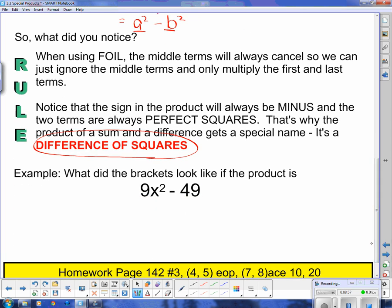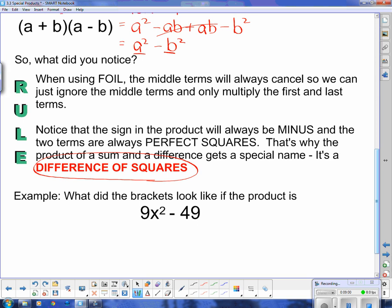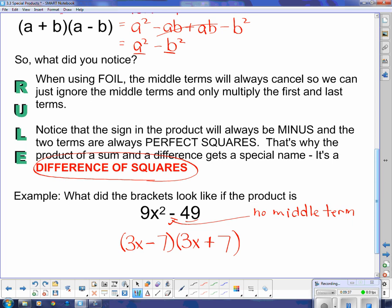And so working backwards, hopefully we'd be able to figure that one out. What if I wanted to know what two brackets made this thing up? Well, since the middle term is missing, they must have canceled each other out. And so we're looking for the middle terms to be exactly the same. These are perfect squares. So it must have been a 3x and a 3x that were multiplied to give me this 9x squared. And to get 49 on the end, it must have been a 7 and a 7. And to get the two middle terms to cancel each other out, one had to be a minus 7, and one had to be a plus 7, and not necessarily in that order.